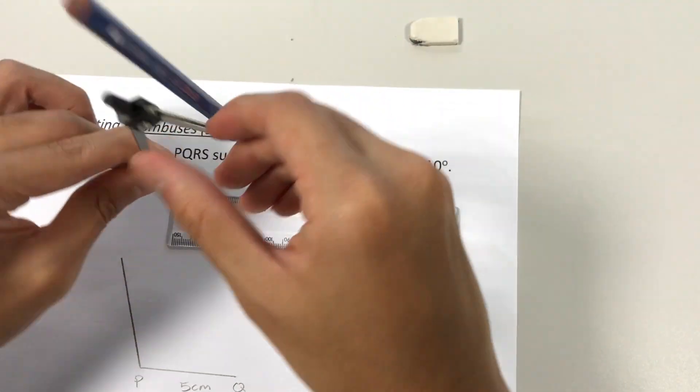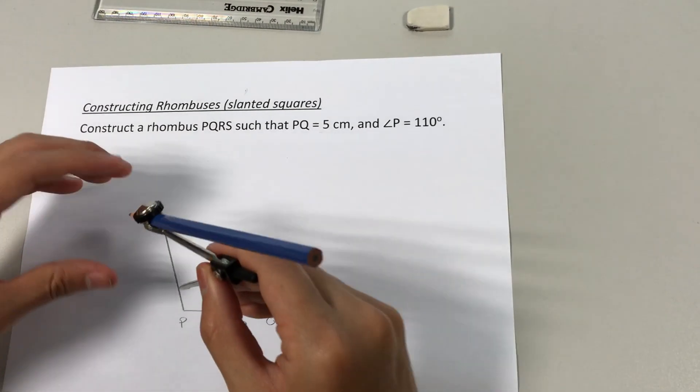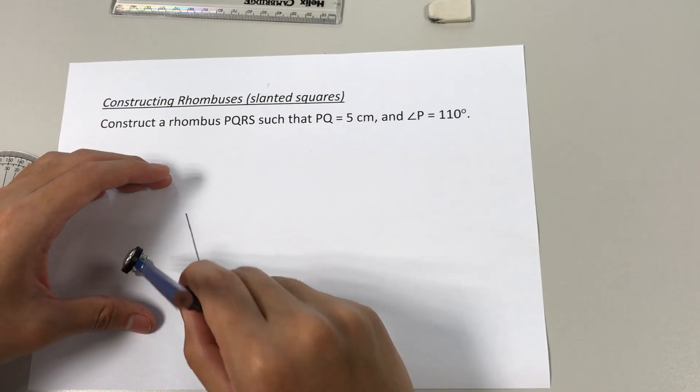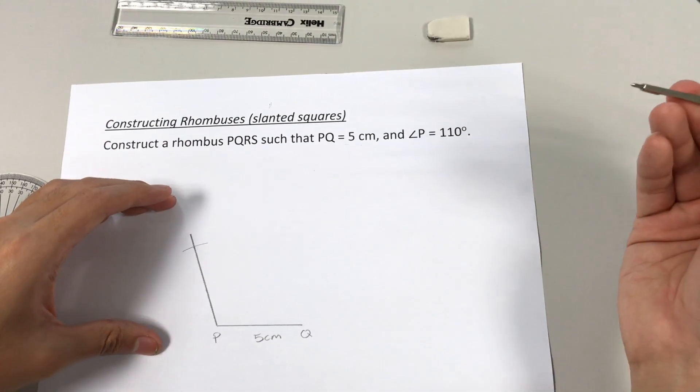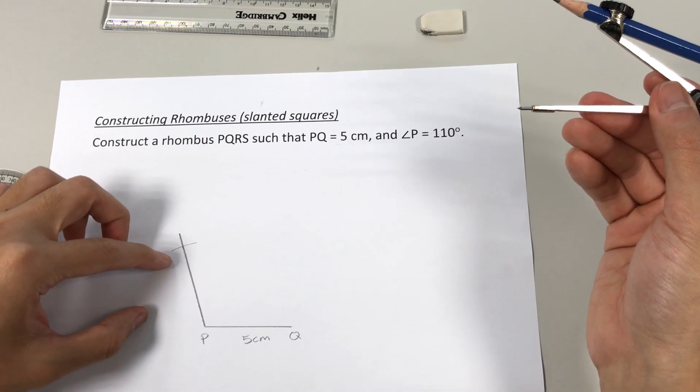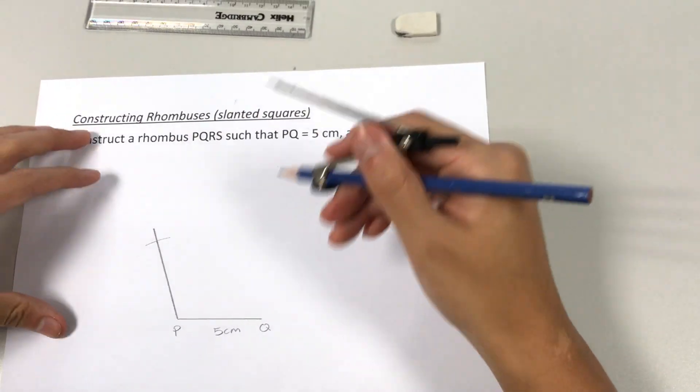Okay, and then we'll put the needle at point P. We mark out. All right, now this point here would be point S.